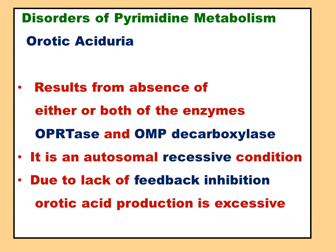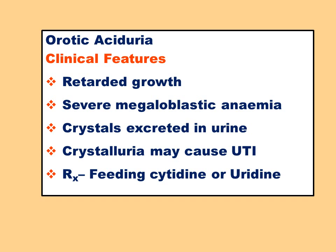The main disorder of pyrimidine metabolism is orotic aciduria, due to the absence of one or both enzymes: orotate phosphoribosyl transferase and/or orotate monophosphate decarboxylase. It is an autosomal recessive condition due to lack of feedback inhibition, causing excess orotic acid to be excreted in urine. Clinical features include retarded growth, severe megaloblastic anemia, crystalluria, and possible urinary tract infection. Treatment is by feeding cytidine or uridine.